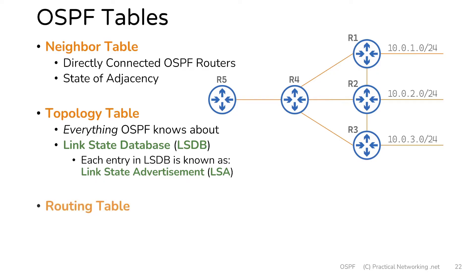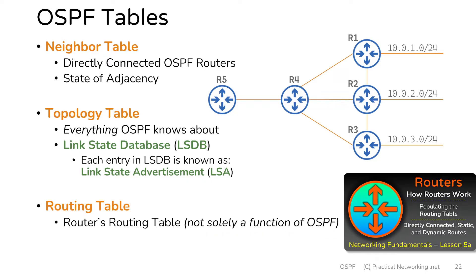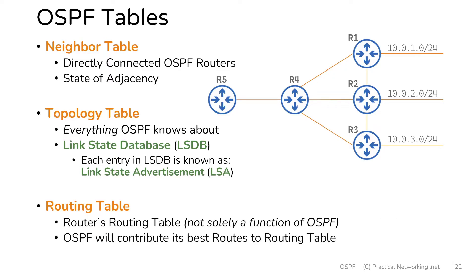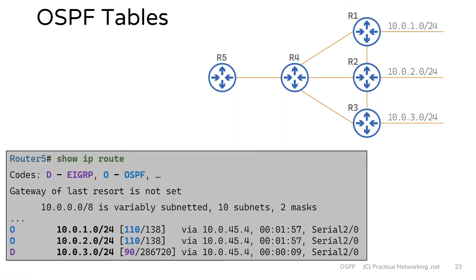The last table we're going to discuss is the routing table. The routing table isn't simply a function of OSPF — it's simply the router's actual routing table, the table that routers use to forward packets. Just like any other routing protocol, OSPF is going to calculate its best routes from its topology table and try to send them to the routing table. The router will then decide which routes are actually the best and will make it to the real routing table. To view the routing table on a Cisco router, you would use the command show IP route.